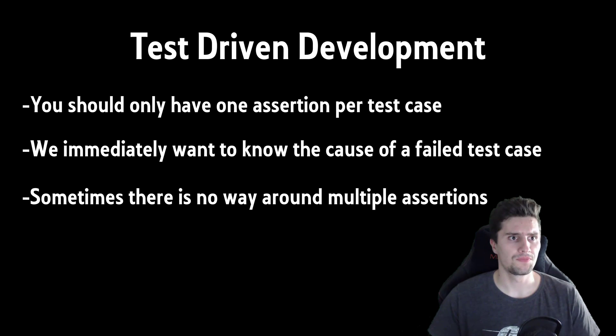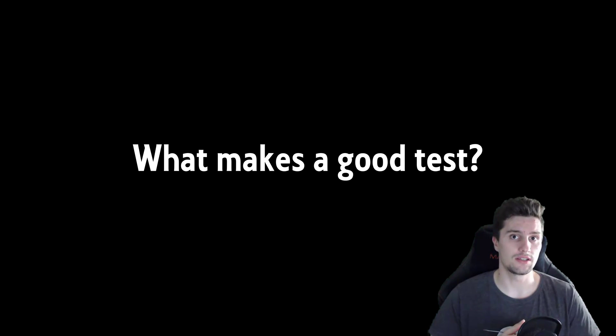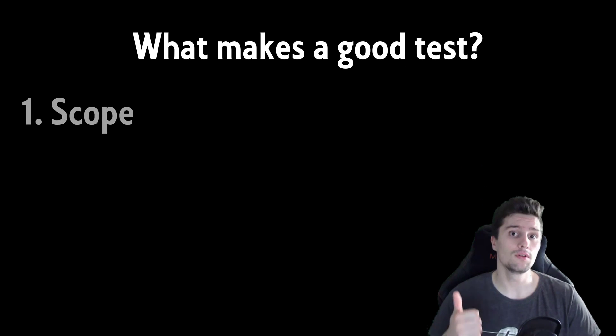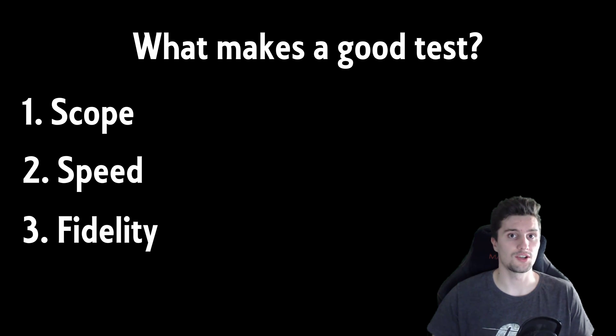Now we need to think about which characteristics we want to have in a good test case. These three characteristics are the scope, the speed, and the fidelity of the test case. The scope determines how much of our actual code in our function that we want to test is covered by our single test case. The speed is pretty self-explanatory, so it just means how fast our test case runs.